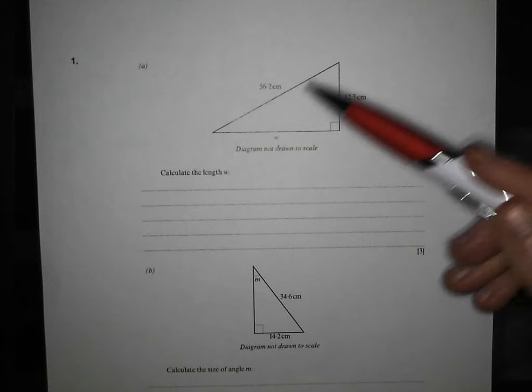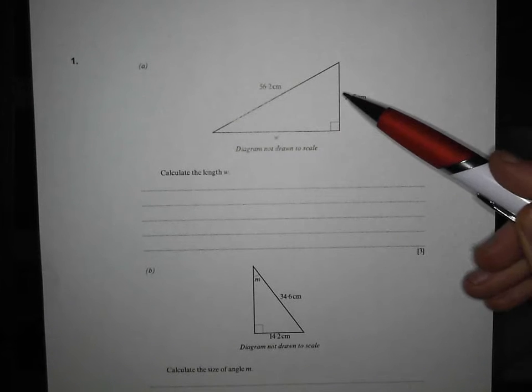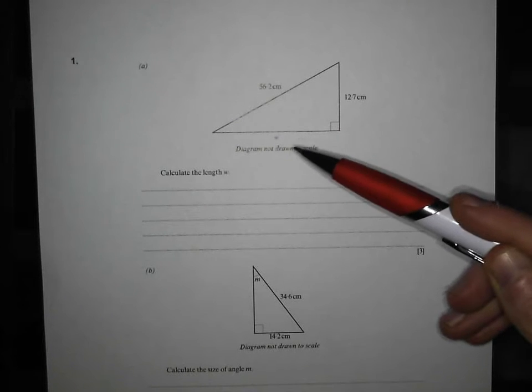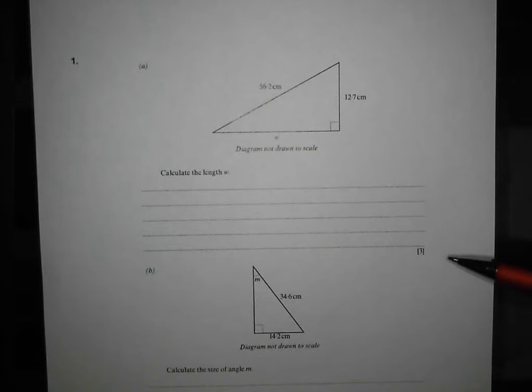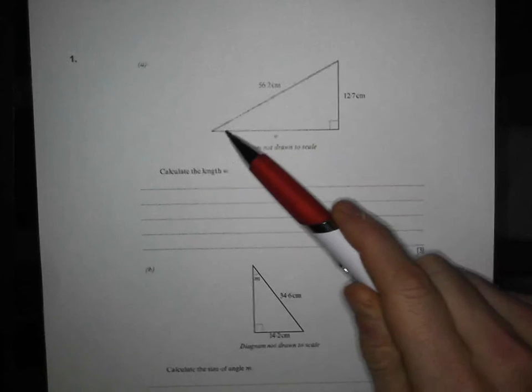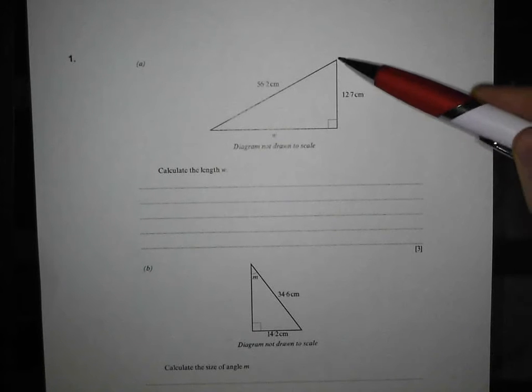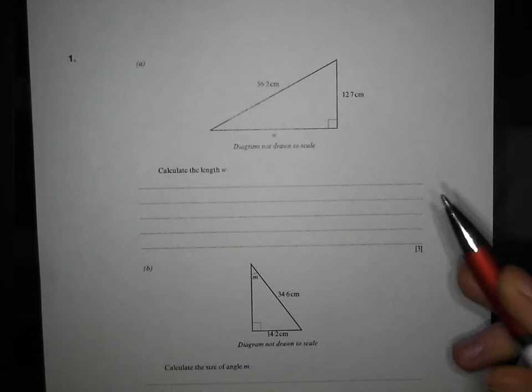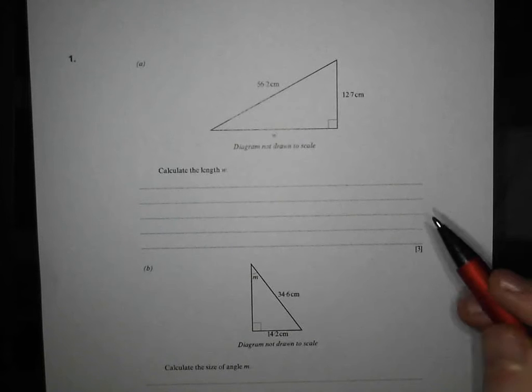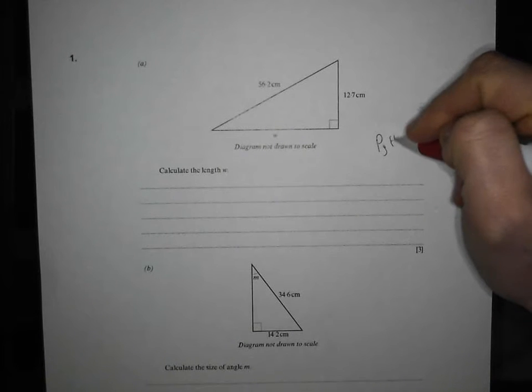Right, okay, so I'm faced with this question here, and my first problem is, I don't know whether it's a trigonometry question or a Pythagoras question. And if you don't get that right, you're getting a big fat zero. So I'm saying to myself, I've got one side, I've got another side, and I need to work out a third side. And whenever I've got two sides and I need another side, it has to be Pythagoras.